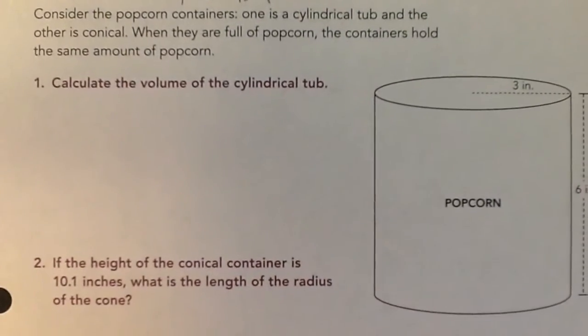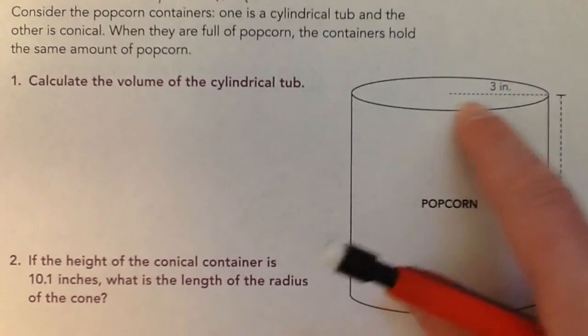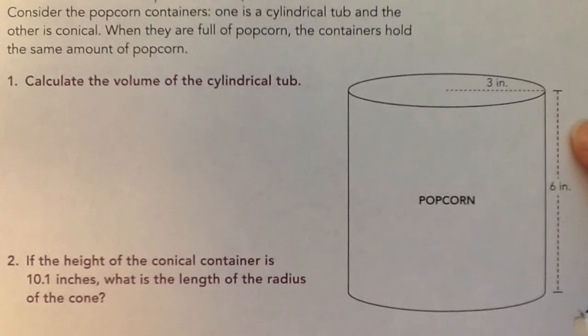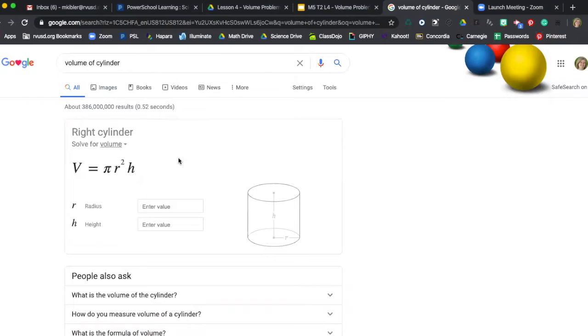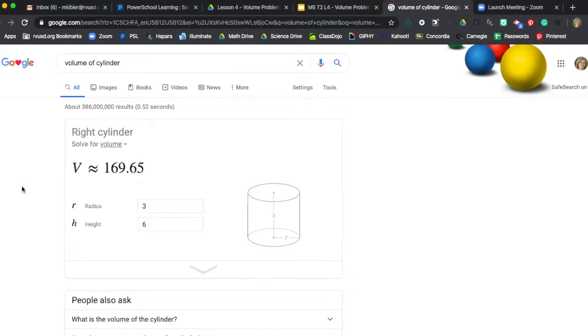Calculate the volume of the cylindrical tub. Here they're telling us it has a 3 radius, a 6 height. So we'll go over and plug those into Google. Our cylinder had a radius of 3, a height of 6, and the volume is 169.65.